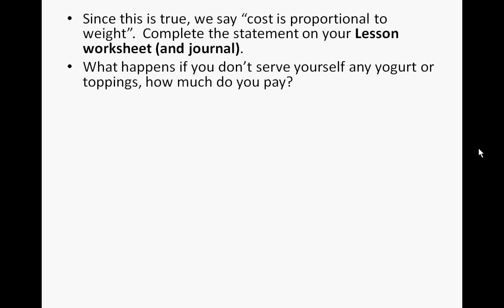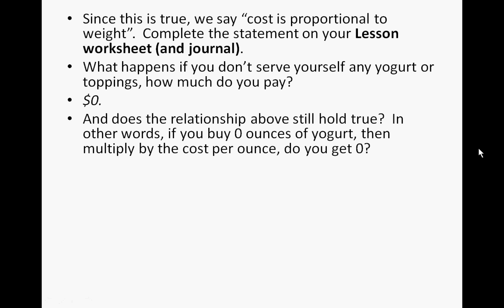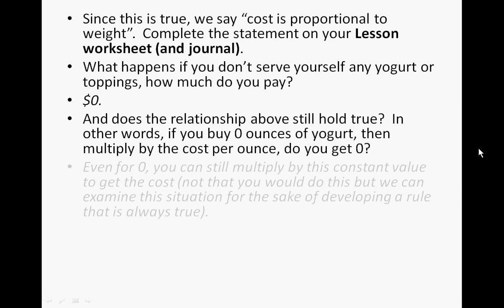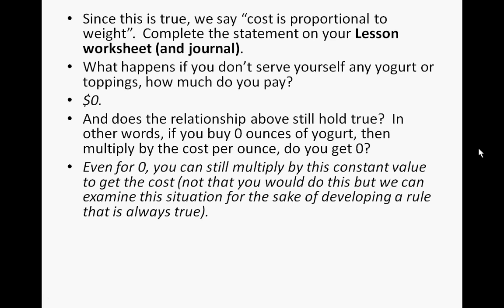What happens if you don't serve yourself any yogurt or toppings? How much are you going to pay? Well, you should have said $0. And does the relationship still hold true? In other words, if you buy 0 ounces of yogurt and multiply the cost per ounce, do you get 0? Even for 0, you can still multiply by the constant value to get the cost. So 0 times 40 cents obviously means you're going to be paying $0.